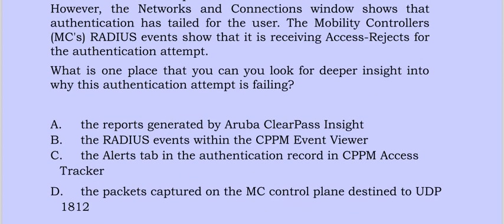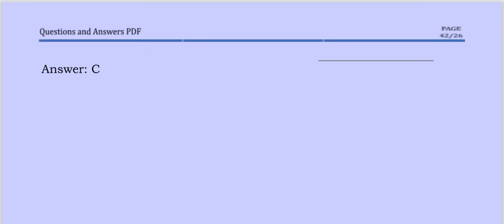What is one place you can look for deeper insight into why this authentication attempt is failing? Option A: the reports generated by Aruba ClearPass Insight. Option B: the RADIUS events within the CPPM event viewer. Option C: the alerts tab in the authentication record in the CPPM access tracker. Option D: the packets captured on the MC controller plane destined to UDP 1812. The correct option is C.